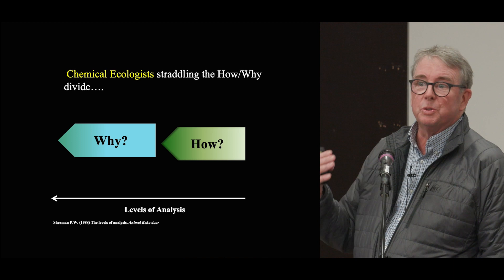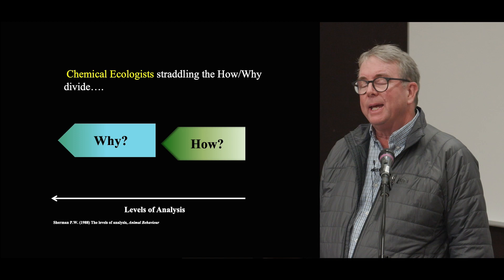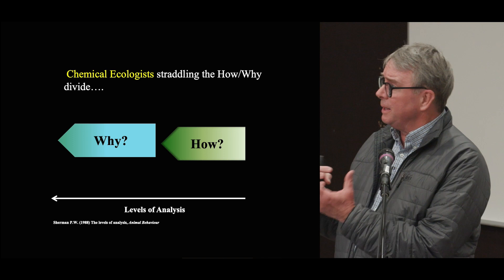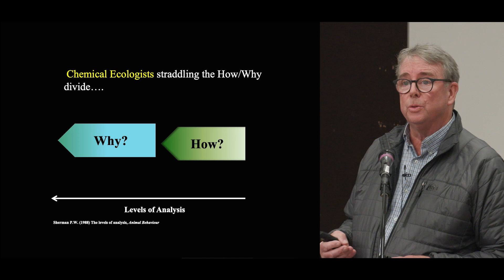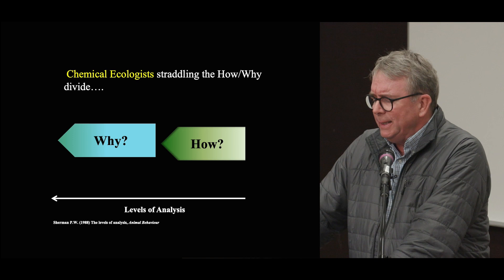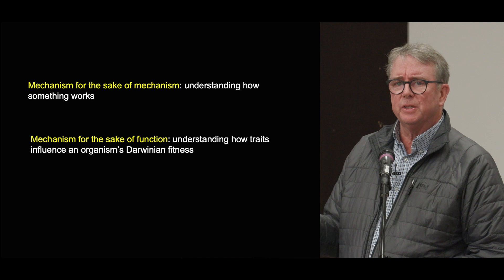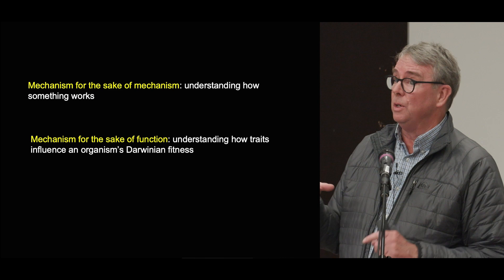Chemical ecologists have always straddled that line because by synthesizing and purifying the chemistry involved in ecological interactions, they're able to manipulate them independently of the organisms involved. When you bring molecular biology in, you can do that via the organism. What we do is to understand not mechanism for the sake of mechanism, but mechanism for the sake of understanding function. We delve deep enough into mechanism to generate a genetic manipulation, then ask what are the functional consequences — what are the consequences for the organism's Darwinian fitness? In doing so, we can answer why questions.